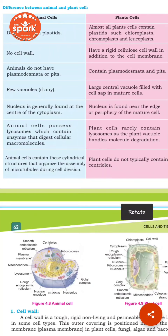Animal cells possess lysosomes, which contain enzymes that digest cellular material. Lysosomes are associated with engulfing and phagocytosis against bacteria. In plant cells, lysosomes are rare — the plant vacuoles handle molecular degradation instead.